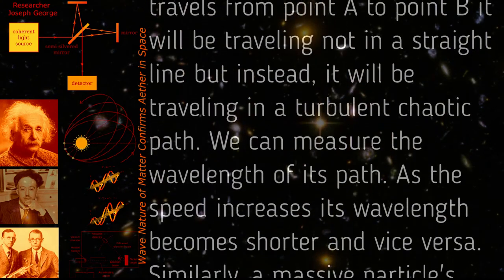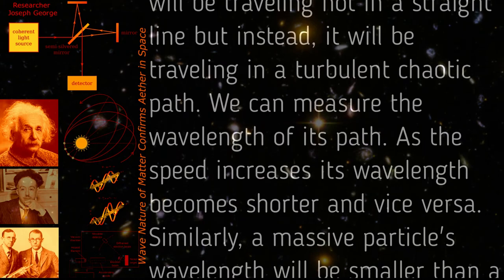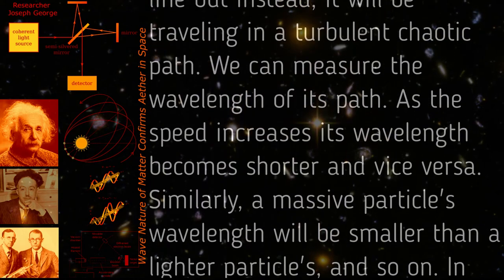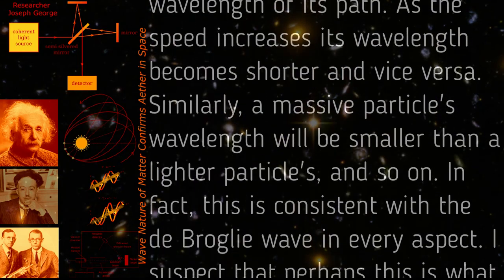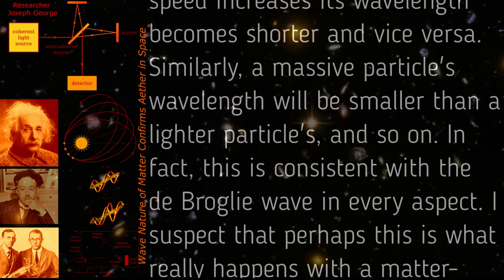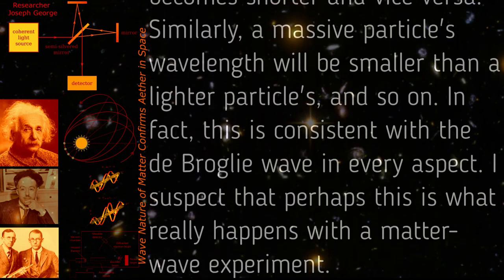As the speed increases, its wavelength becomes shorter and vice versa. Similarly, a massive particle's wavelength will be smaller than a lighter particle's and so on. In fact, this is consistent with the de Broglie wave in every aspect. I suspect that perhaps this is what really happens with a matter wave experiment.